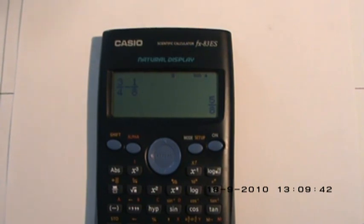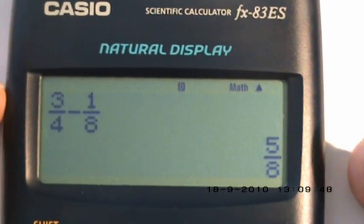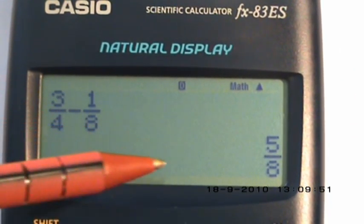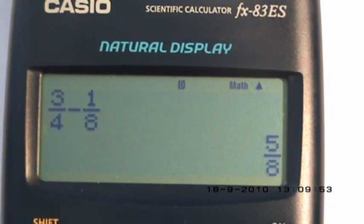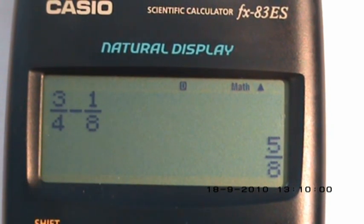We'll have another quick close-up of that. You'll see in this case we've done a subtraction - we have three over four minus one over eight equals five over eight. So that's very handy for doing fraction calculations on your Casio calculator. Thank you very much.